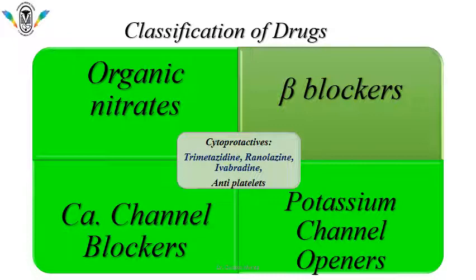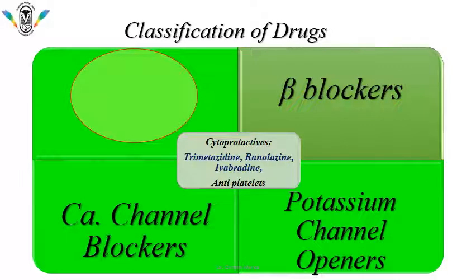In case of angina, the main groups of drugs which are useful are organic nitrates, calcium channel blockers, potassium channel openers, and beta blockers. Along with them, cytoprotectives and antiplatelets play an adjuvant role. So trimetazidine, ranolazine, ivabradine, and antiplatelet agents are used as adjuvant therapy. We have already discussed organic nitrates, so we will continue with the rest of the drugs useful for the treatment of angina.